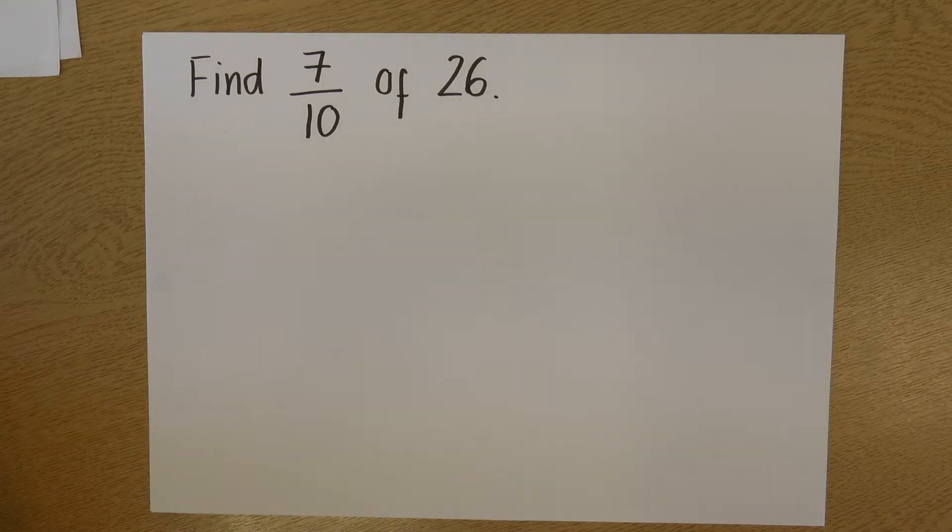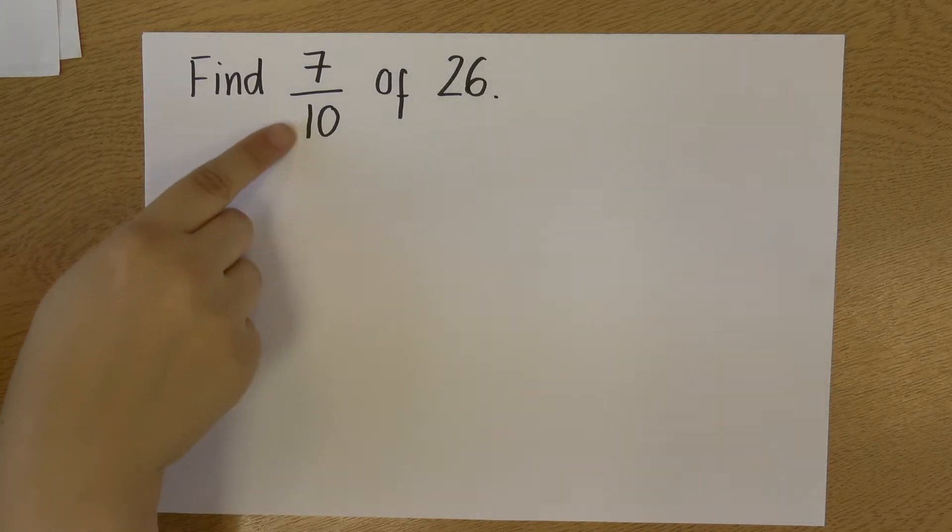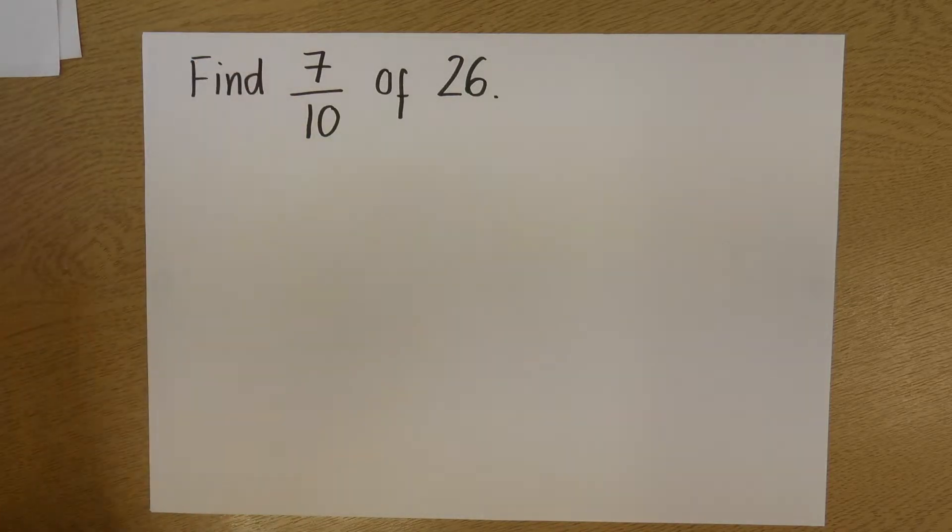So finding fractions of an amount, we always do a very simple calculation. We divide by the denominator, the bottom number, and then multiply by the top number, the numerator.